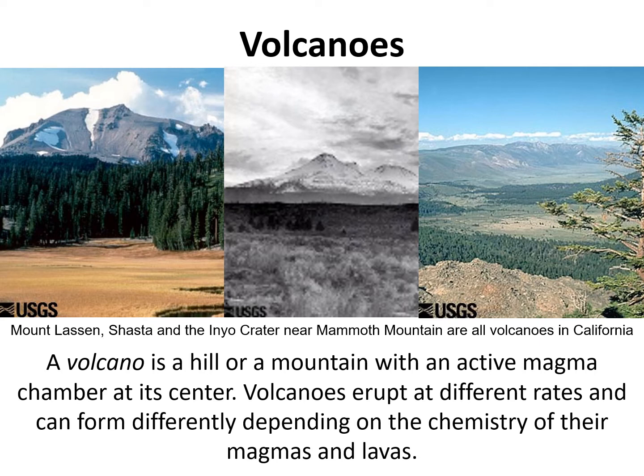All three of these volcanoes — Mount Lassen, Mount Shasta, and Mammoth Mountain — are considered active volcanoes here in California. Volcanoes erupt at different rates, and this happens due to differences in the chemistry of the magma and lava that are produced during the volcanic eruption.